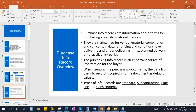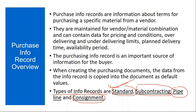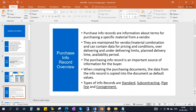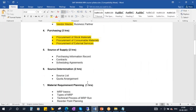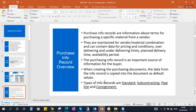The types of info records are: standard, subcontracting, pipeline, and consignment. Today we will be covering standard info records. The remaining types we will cover when we go to special stock documents.